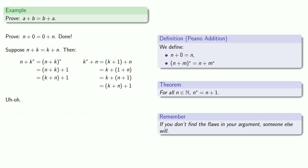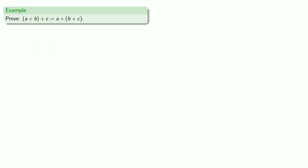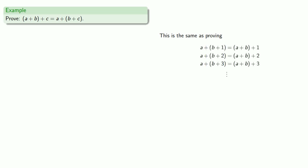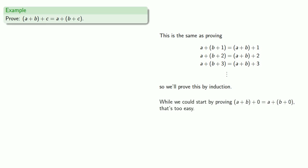So it seems that we need to prove associativity first. If I want to prove the associative property, this is really the same as proving a whole bunch of statements, and this is the type of thing we'll prove by induction. We could start by proving a plus b plus zero equals a plus b plus zero, but that's too easy. By this point, you should pretty much be able to write that proof without any difficulty.